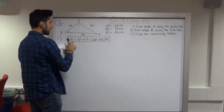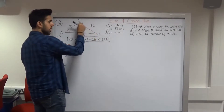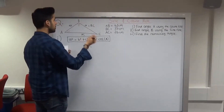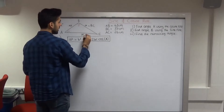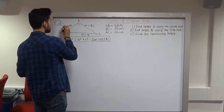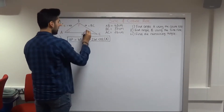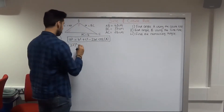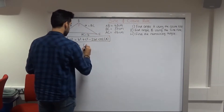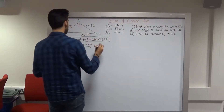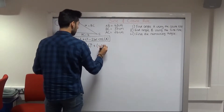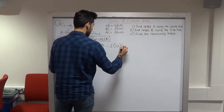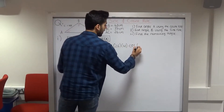If we want to find angle A, then side a is the opposite side, which is BC. So BC = 37 is our a. For b and c, you can choose either one — I'm going to call AC = 26 as b, and AB = 42 as c. Plugging into the formula: 37² = 26² + 42² − 2(26)(42)·cos(A).